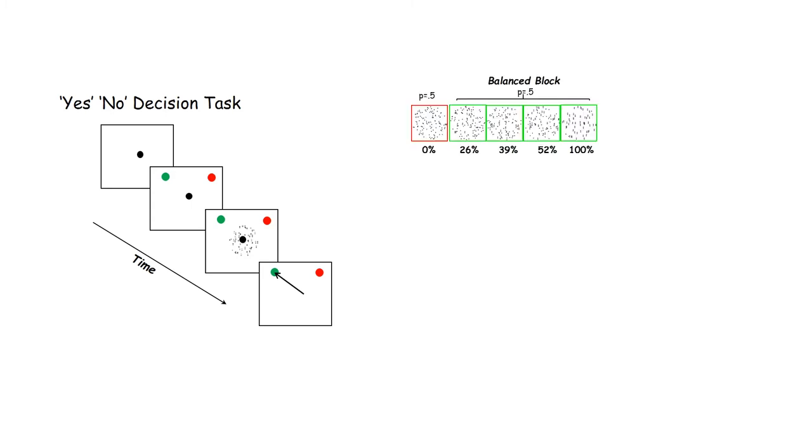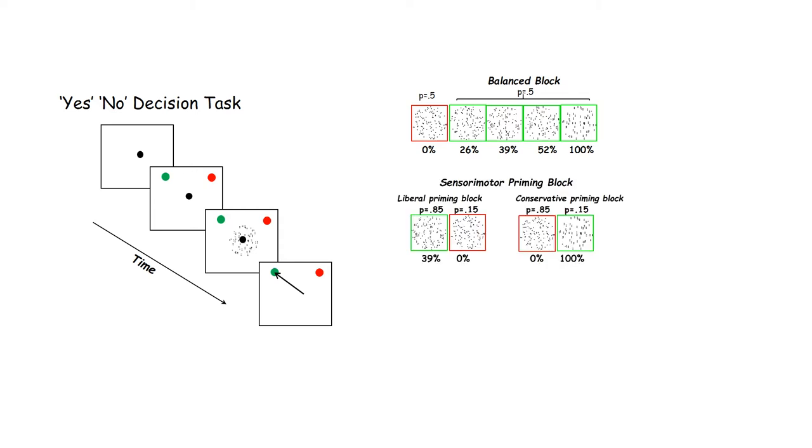Monkeys performed three blocks of trials. The first we called the balance block in which monkeys saw equal proportions of signal and noise trials. The second was a priming block in which monkeys experienced either more trials requiring a yes response or more trials requiring a no response, liberal or conservative priming.